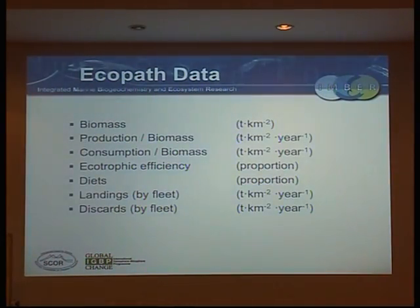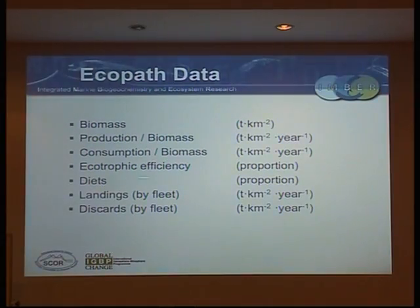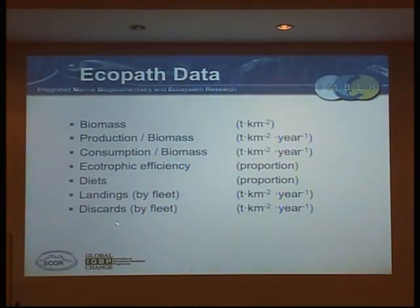For each group you have to give it its name and all that kind of stuff, and you can tailor quite heavily what you want out of it. These are the basic kinds of data and the units you want them in: the biomass of the group in the area you're modelling, the production-to-biomass ratio — I'll explain how you can get these data in a minute — and the consumption-to-biomass ratio.